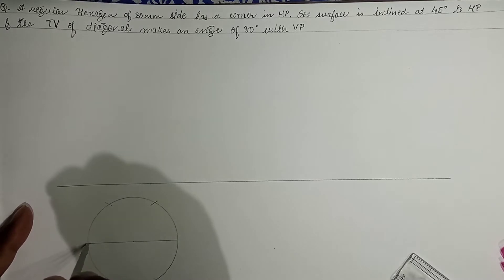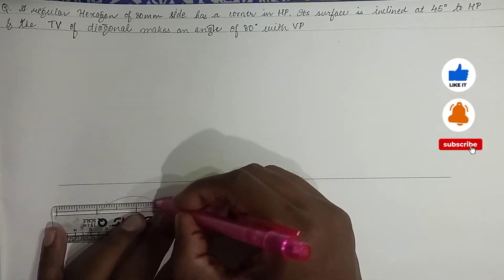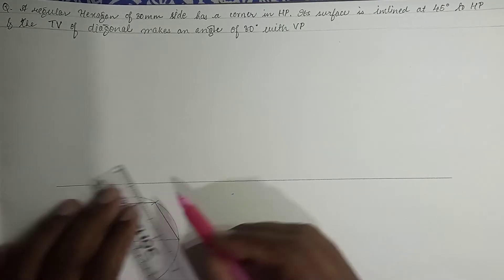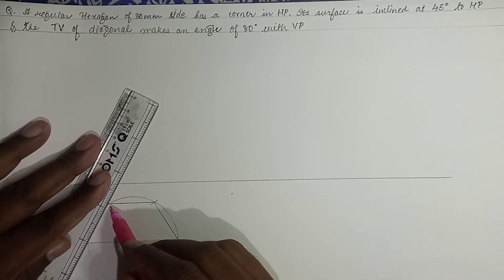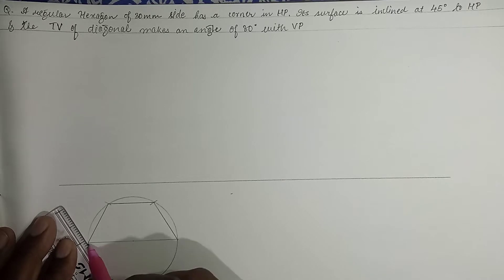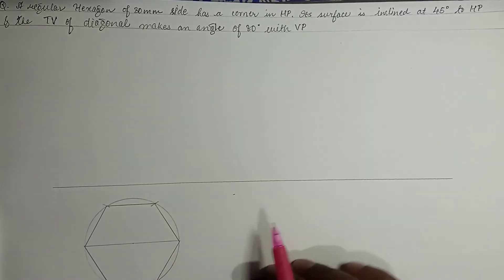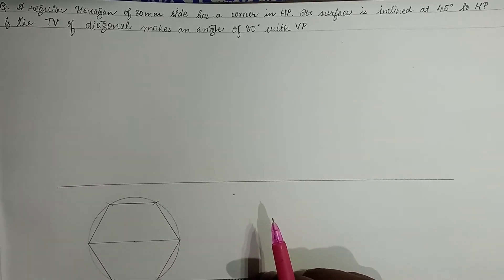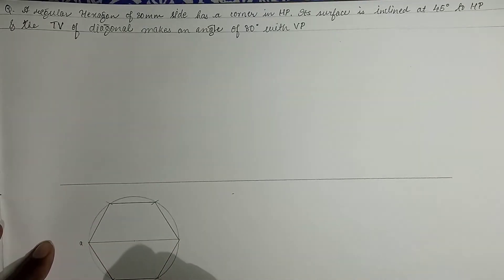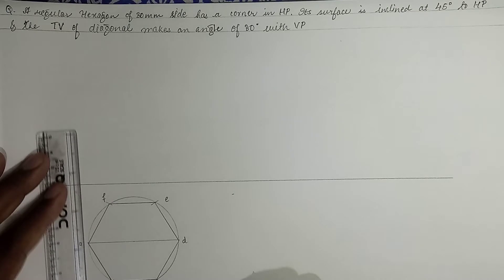Since the corner is in HP, this is the orientation we will choose for the plane. The hexagon has to be of darker shade; the rest is construction work and the circle can be removed later on. We label the corners: this is A, B, C, D, E, F. Then we project it to the front view.